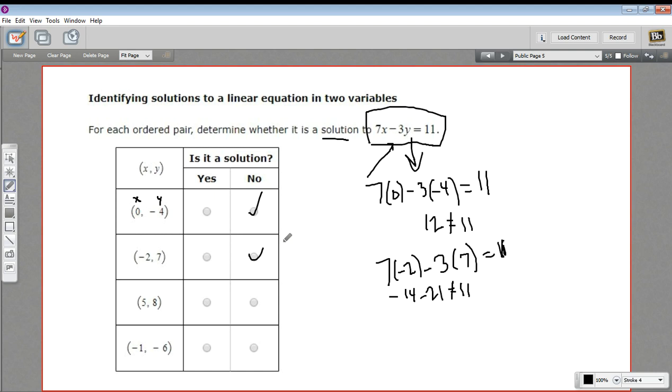Let's try 5 and 8. So rewriting the equation again. 7 times the x value of 5 minus 3 times the y value of 8 equals 11. 7 times 5 is 35. And negative 3 times 8 is negative 24. Aha! 35 minus 24 is 11. That one works. So this is a solution.